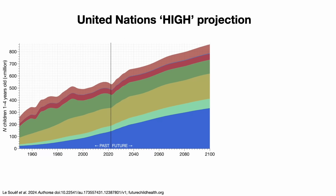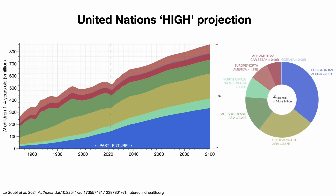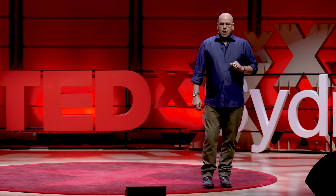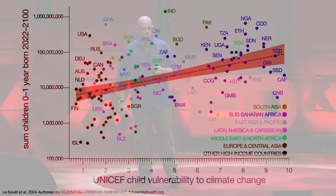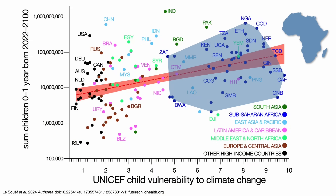But growth isn't equal everywhere, of course. This is the world split up into major regions, and the number of children that will be born per year by the end of the century. Over a third of all children on the planet will be in sub-Saharan Africa. Using the United Nations' own climate vulnerability index for children, Africa falls out not only as having the most children, but the most vulnerable children.